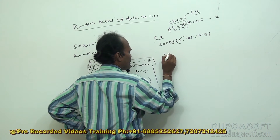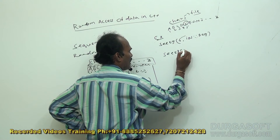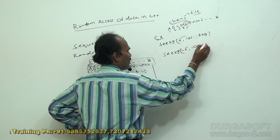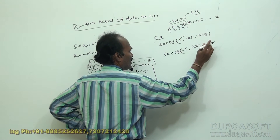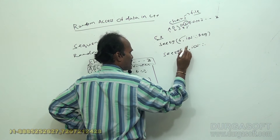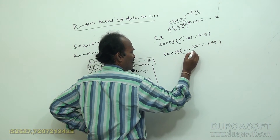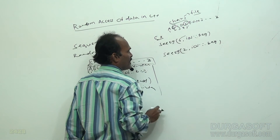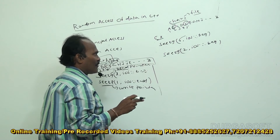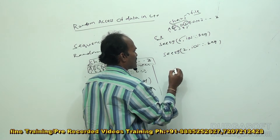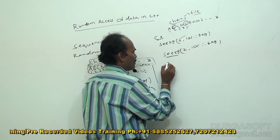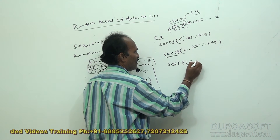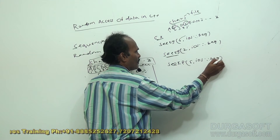Another example: seekg(2, ios::beg). From the beginning starting position, the character pointer is placed at the second character, which is 'b'. Like this you can move the file character pointer to any location. seekp works with the same syntax — seekp(5, ios::beg) — for writing at a particular position.